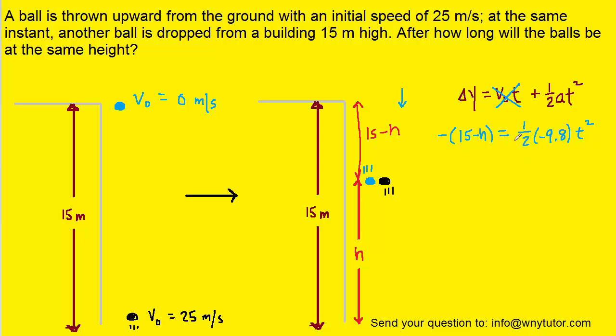Now we can simplify this equation. One thing we could do is distribute the negative sign into the parentheses. We could also multiply one half by negative 9.8. We will isolate h by adding 15 to the right side of the equation. And this is a result that we're going to hold on to and use momentarily.